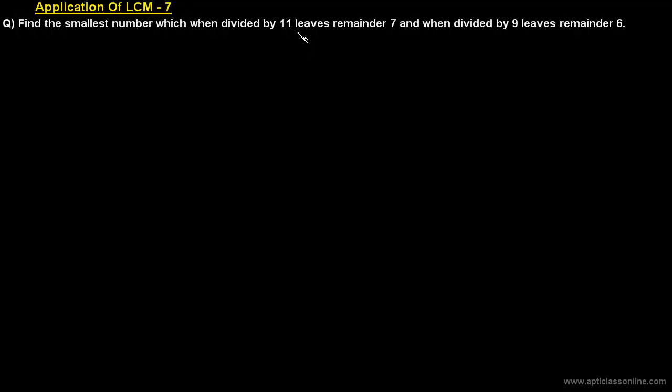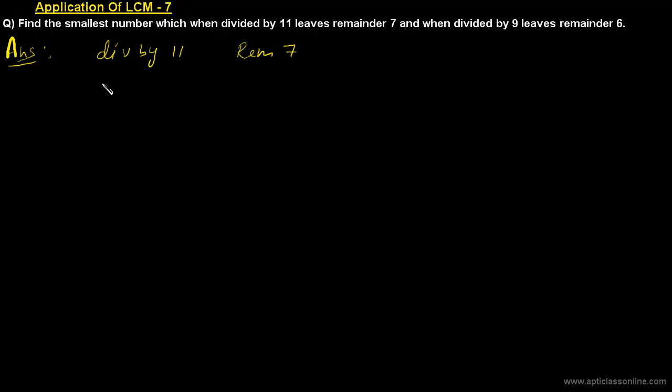As we have seen in previous examples, if the remainders are the same there is a method we can use to find the answer. But here we check the difference between the divisor and the remainder. The difference of 11 and 7 is 4, and the difference of 9 and 6 is 3, which are not equal.